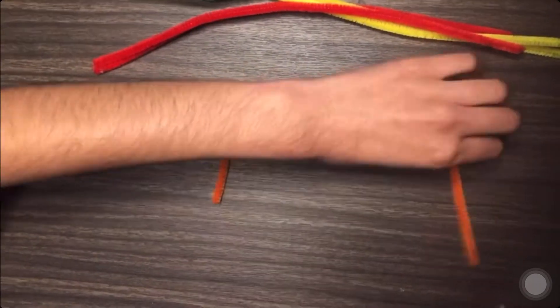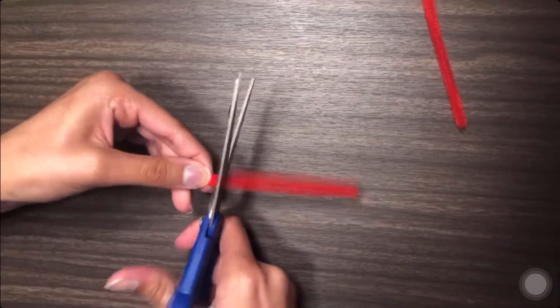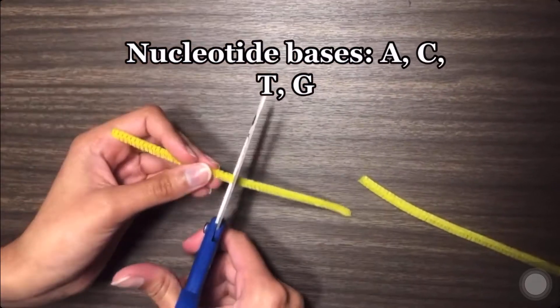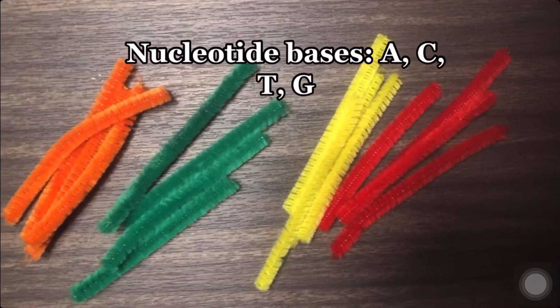These other four colors we can cut into fourths. These will represent the four nucleotide bases found in DNA: adenine, guanine, cytosine, and thymine.